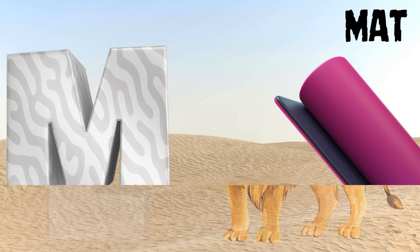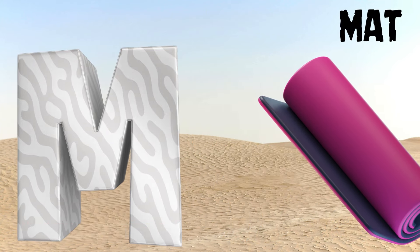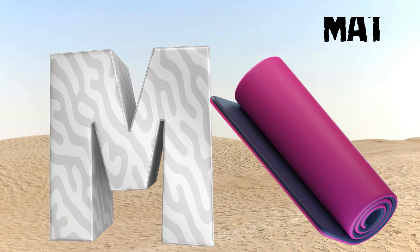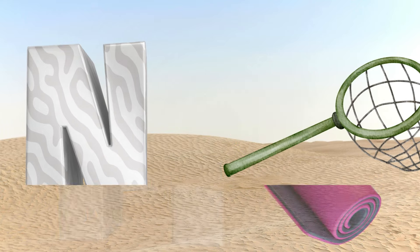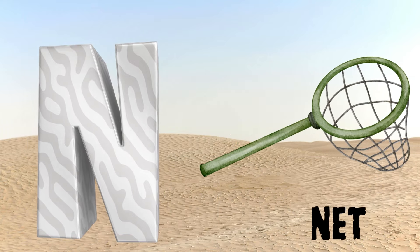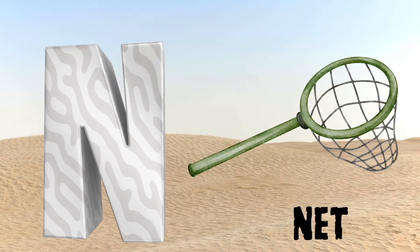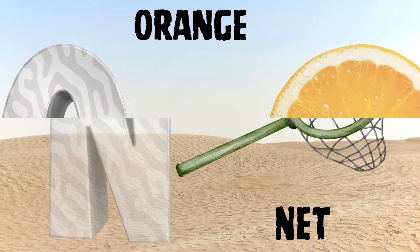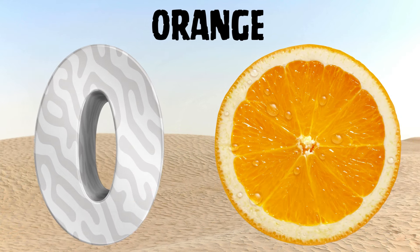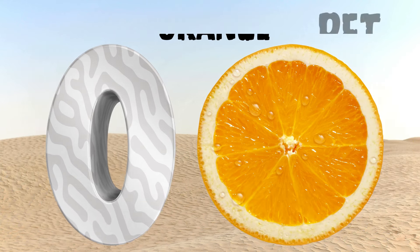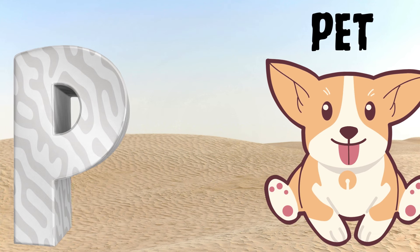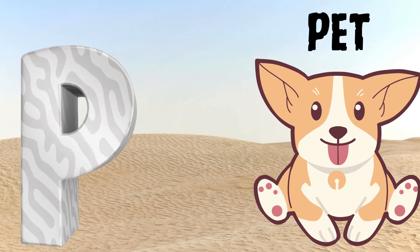M is for mat, m-m-mat. N is for net, n-n-net. O is for orange, o-o-orange. P is for pet, p-p-pet.